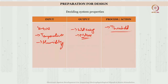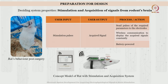When we come to our system — stimulation and acquisition of signals from a rodent's brain — these are the user inputs and outputs required. The system is placed in a backpack manner on the rat and communicates wirelessly with a GUI. Stimulation pulses have to be sent from the user via the GUI to the rat, and at any given time we also need to acquire signals as output wirelessly back to the GUI.